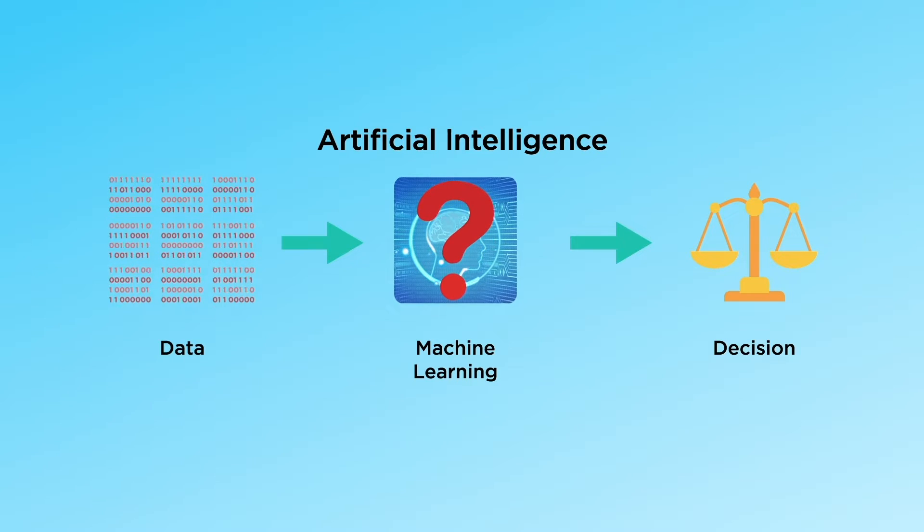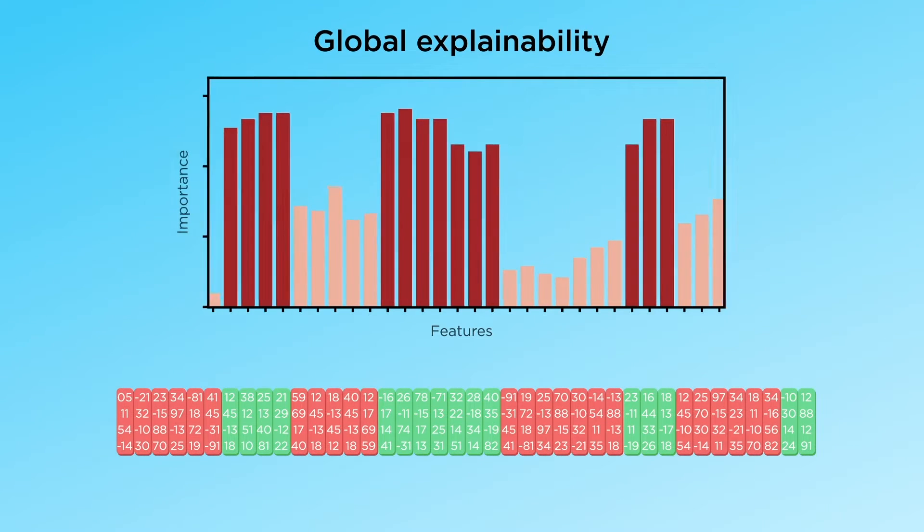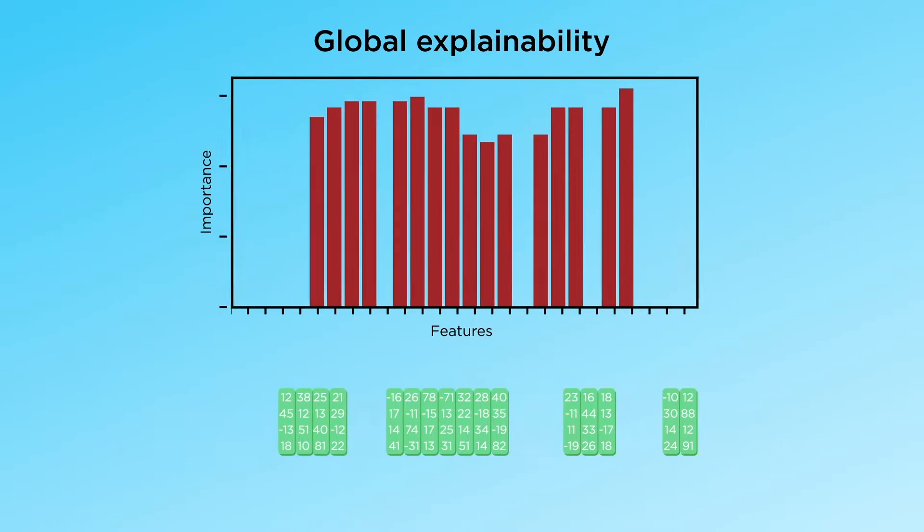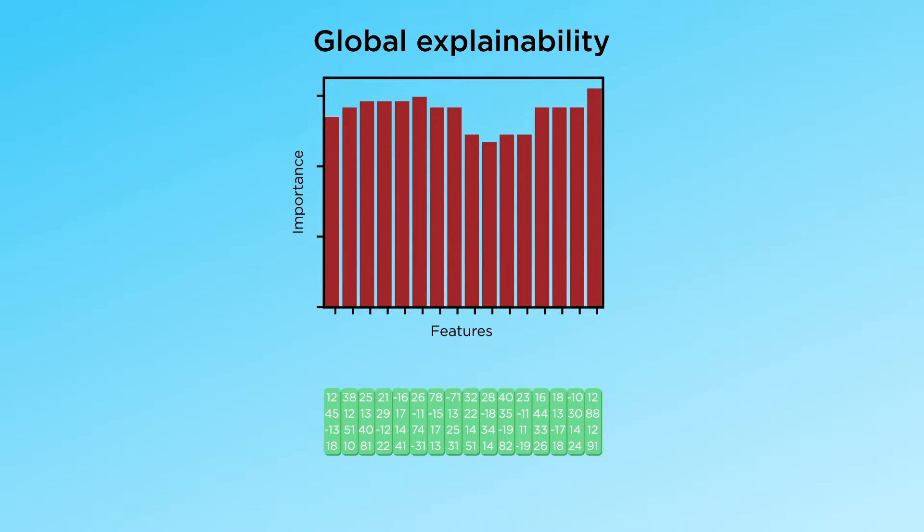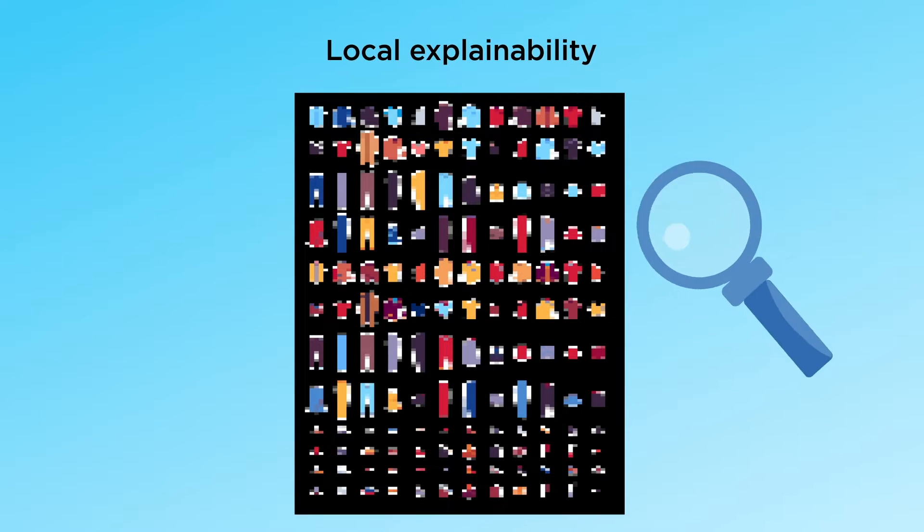But how does the AI decide? There are two main questions: global explainability, what information is relevant, and local explainability, why this decision?